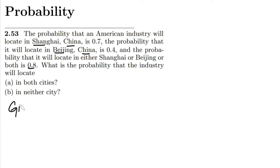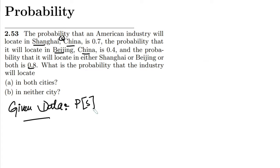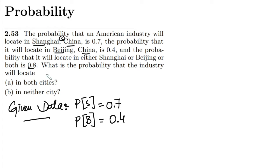Let me write the given data first, using S for Shanghai and B for Beijing. The probability of Shanghai is 0.7 and the probability of Beijing is 0.4. The probability that it will locate in either Shanghai or Beijing or both is the union — P(S∪B) = 0.8.